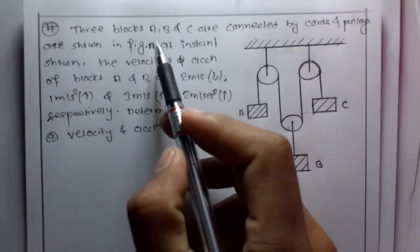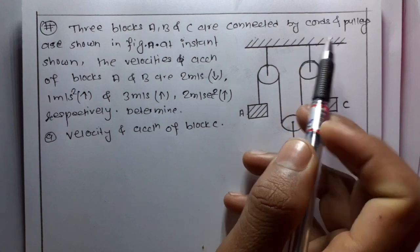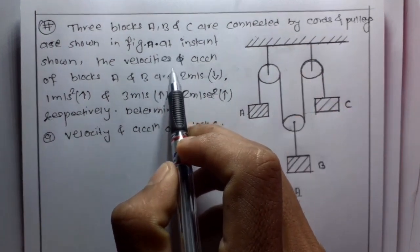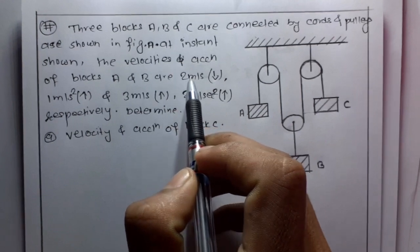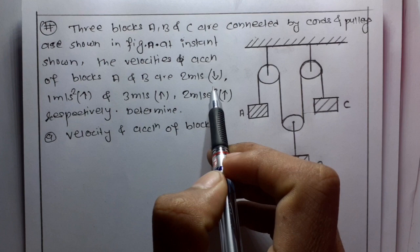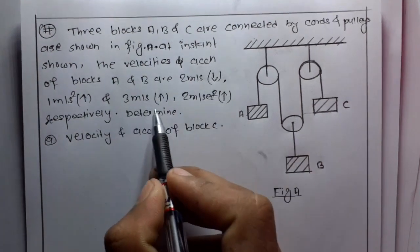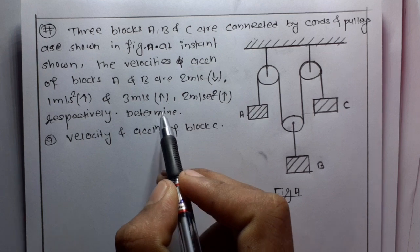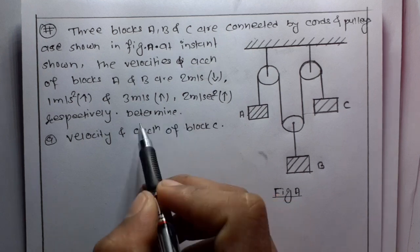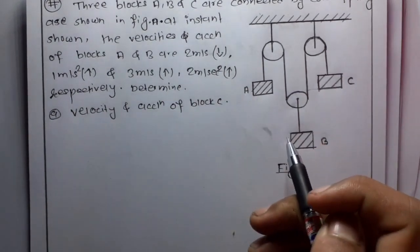The next question is: 3 blocks A, B, and C are connected by chord and pulley as shown in the figure. At the instance shown, the velocity and acceleration of block A are 2 m/s downward and 1 m/s² upward, and for block B are 3 m/s upward and 2 m/s² upward respectively. Determine the velocity and acceleration of block C.